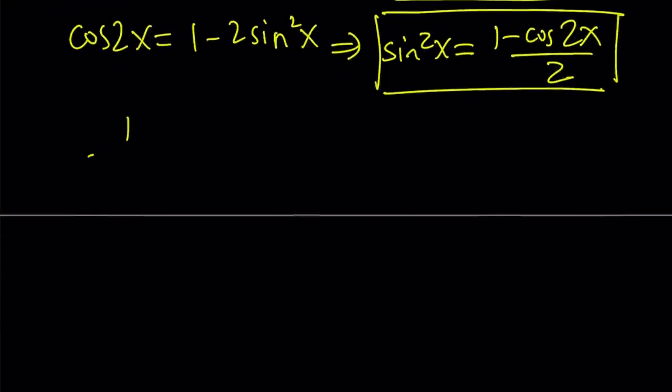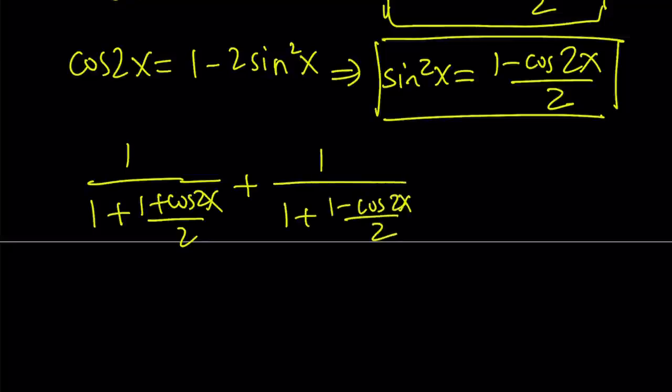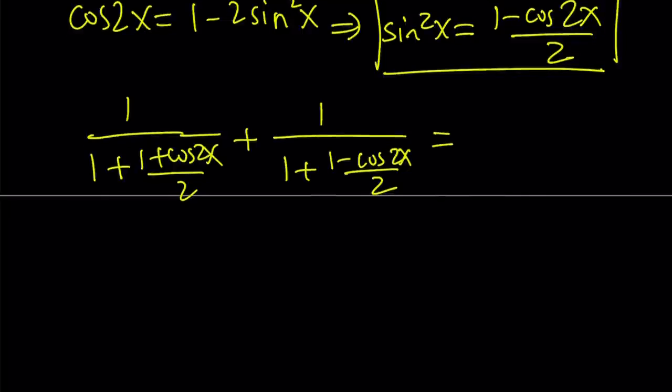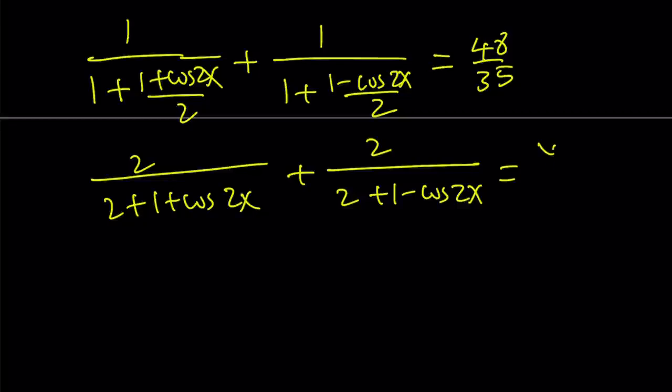So this gives us 1 over 1 plus cosine squared of x which is going to be 1 plus cosine of 2x over 2 and then plus 1 over 1 plus 1 minus cosine of 2x over 2. So we can go ahead and multiply the top and the bottom on the left hand side by 2. That gives us 2 divided by 2 plus 1 plus cosine of 2x, 2 divided by 2 plus 1 minus cosine of 2x.